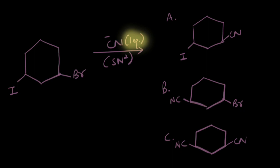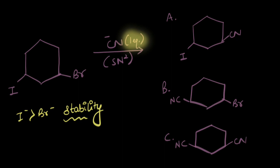Thinking about size, the iodide ion is much larger than the bromide ion. The larger the size of the ion, the more spread out the charge is, the lesser the charge per unit area, and the more stable the ion. So the iodide ion is more stable than the bromide ion, meaning the iodide ion would leave. Therefore, the answer is option B.